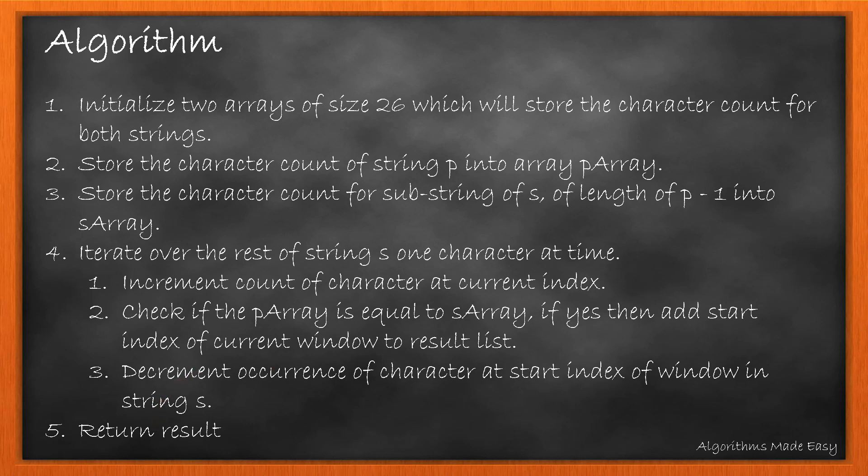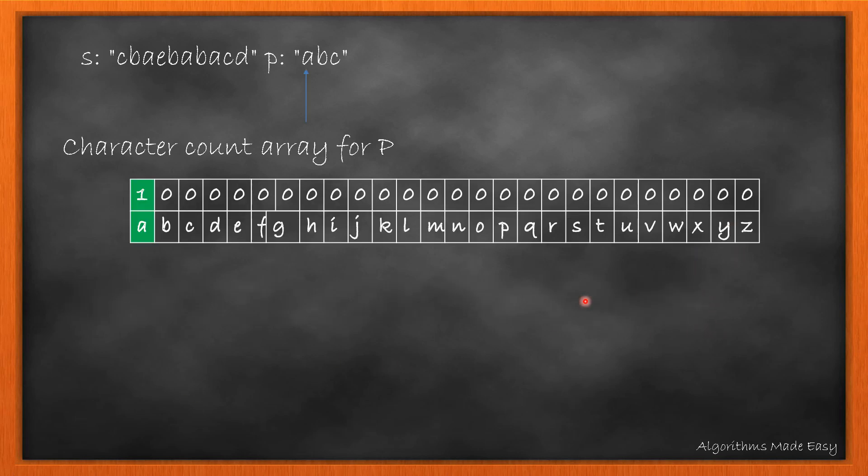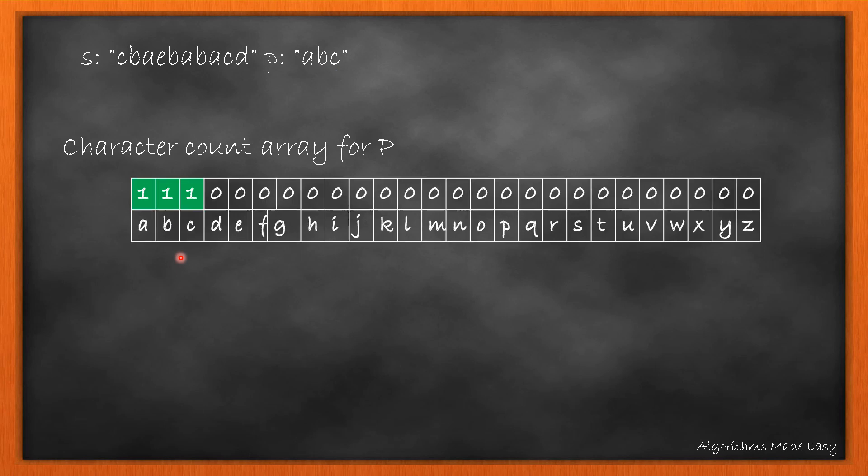Let's see it in action. Our arrays will look like this. That will store the count of each character. Initially, we will iterate through P and store its count in the character count array for P. This will be the final array that we will be using in comparisons.